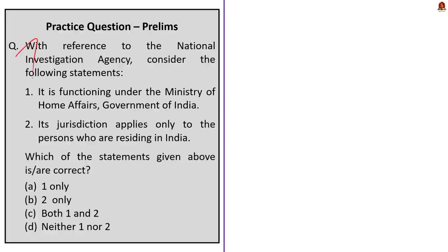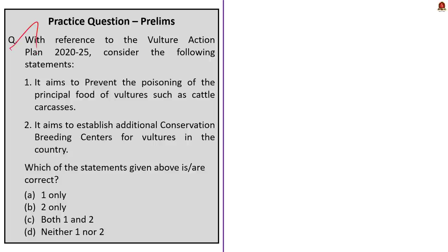The next question is about the NIA. Statement 1: It functions under the Ministry of Home Affairs — this is correct. Statement 2: Its jurisdiction applies only to persons residing in India — this is incorrect, as we covered in our discussion. The correct answer is option A — Statement 1 only. The next question is about the Vulture Action Plan 2020–25. Statement 1: It aims to prevent the poisoning of principal food of vultures like cattle carcasses — correct. Statement 2: It aims to establish additional conservation breeding centers for vultures — also correct. The correct answer is option C — both one and two.